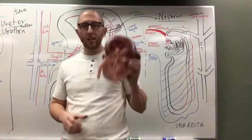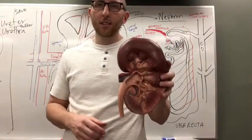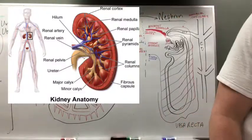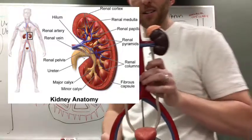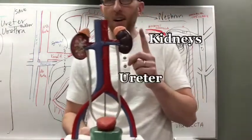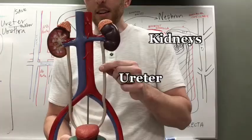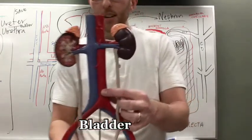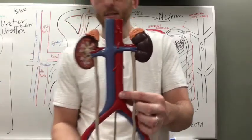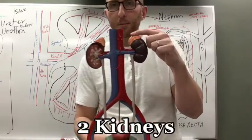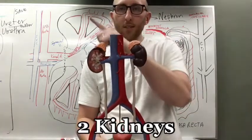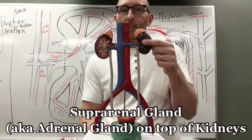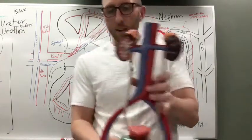First up, kidney anatomy. You've got two of them. Here's a picture of the kidneys on your screen, and we've got a lot of models in the lab. Here's another model showing the kidneys, the ureter, and the bladder. The main thing to know is you've got a right and left kidney, and something on top called the suprarenal gland. Here's a link to this model video.